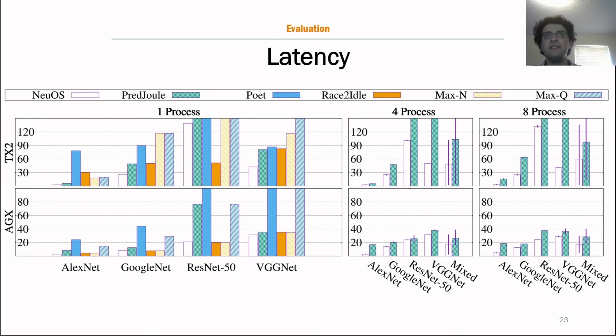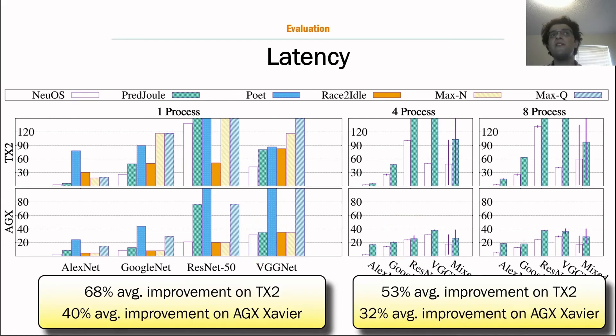So here's the latency breakdown. As you can see here, NeOS outperforms other solutions. But the anomalies we talked about here, you can see that the POET would miss the deadlines we've set for it. However, NeOS would not. So the sacrifice in energy was to meet the deadline. And here's our average improvements. Again, across the board, we see improvements. TX2 has more headroom for improvements, but you can see also substantial improvements on the AGX Xavier.